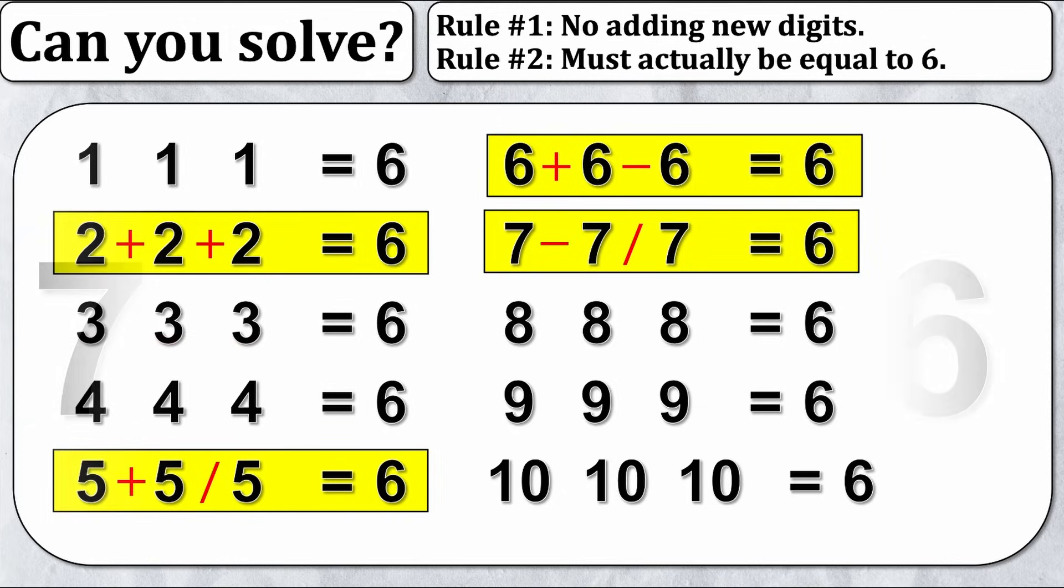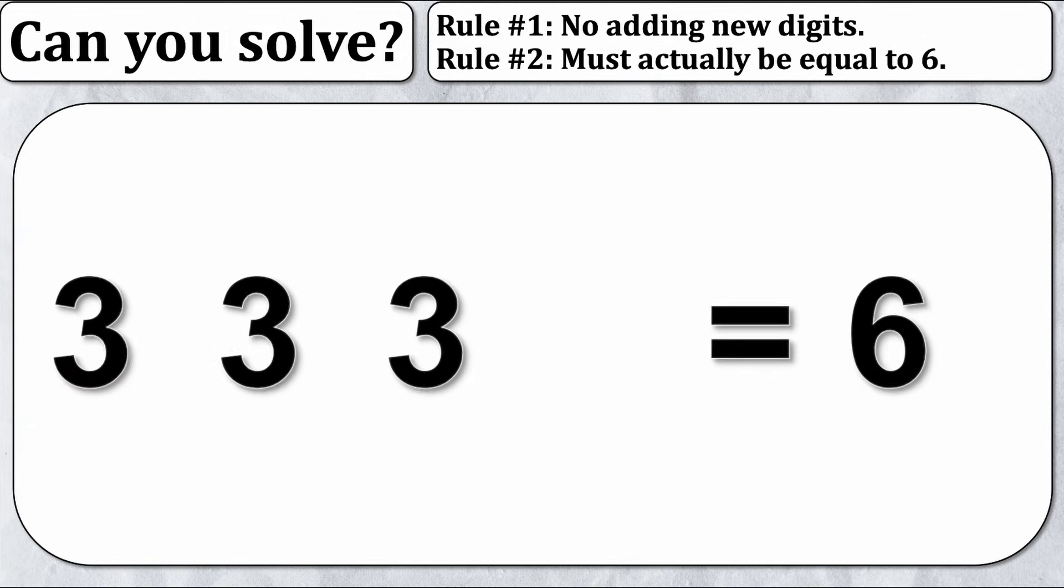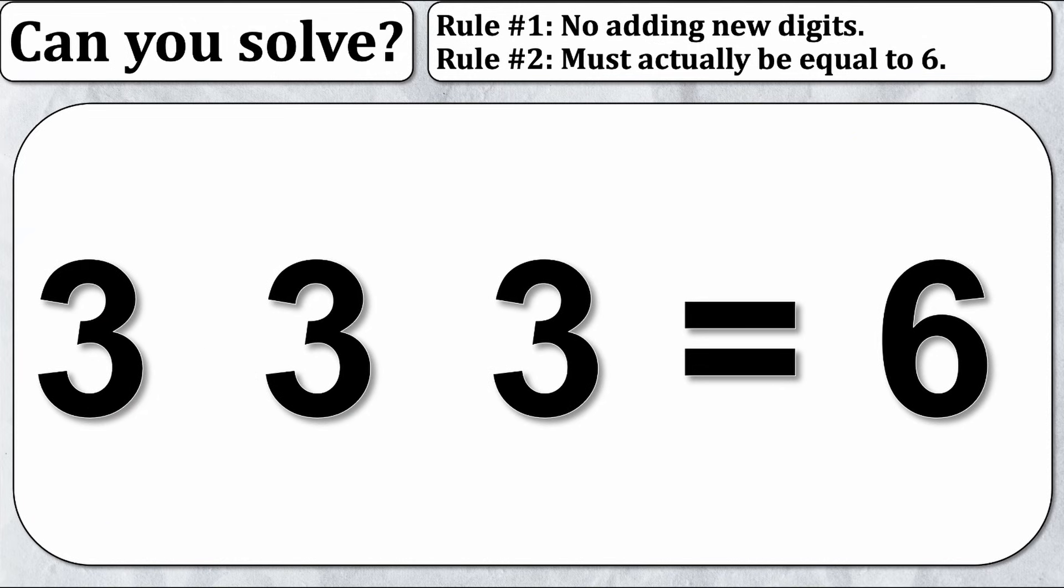Here's where we start to get into the harder ones, starting with number three. For three, the way I did it was just three times three minus three. Three times three is nine, minus three is six.